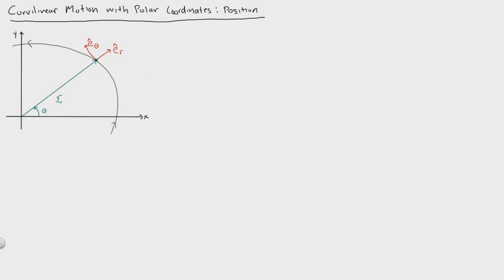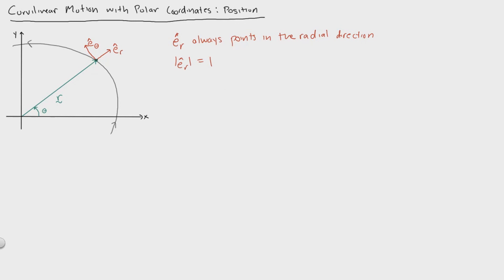Let me write out the properties of er. er always points in the radial direction. The magnitude of er is equal to one — that's simply because it's a unit vector, so its only purpose is to specify a direction.